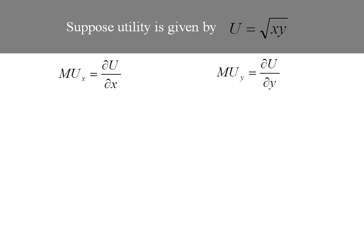Now notice these are partial derivatives because we've got more than one good. So I need to rewrite my functional form as x to the one-half times y to the one-half, because I can't take a derivative of a radical symbol — I have to first convert it into an exponent.